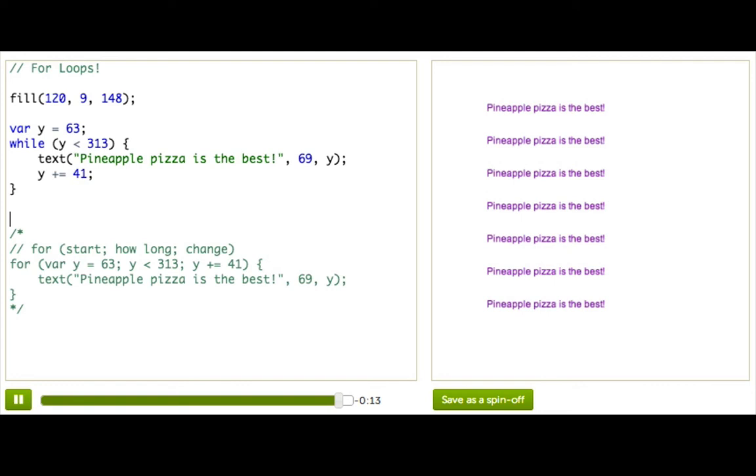As a final note, you cannot always convert a while loop into a for loop, only when they're in a really simple form like this, where it's really clear what variable you're starting out, how long it's going for, and how it's changing.